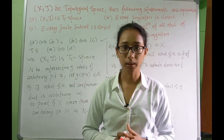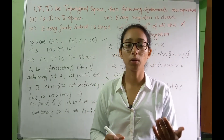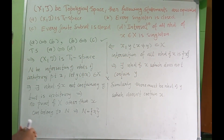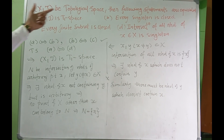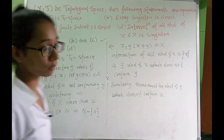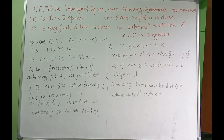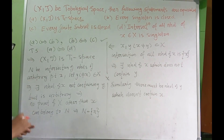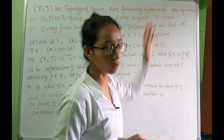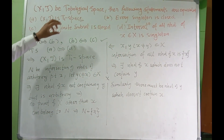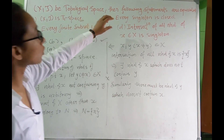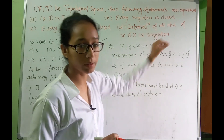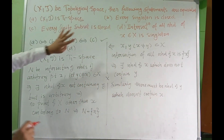Let's talk about a theorem with different equivalent definitions of T1. The theorem states: for a topological space X, T, the following four statements are equivalent: (1) X, T is a T1 space; (2) every singleton subset is closed; (3) every finite subset is closed; (4) the intersection of all neighborhoods of any point x in X is the singleton set {x}.